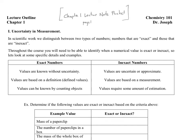As far as measurements go, the first thing we're going to talk about is uncertainty in measurement. That's here in Part 1 of this Lecture Note Outline packet. It turns out that in scientific work, we distinguish between two types of numbers: those that can be exact or those that are inexact. The reason we distinguish between them is that exact numbers have a degree of certainty that inexact numbers do not, and the conclusions drawn from each are very different.